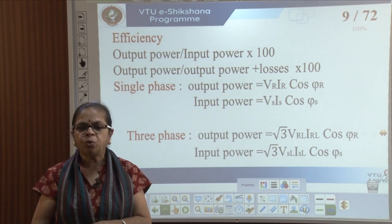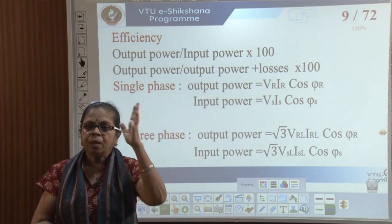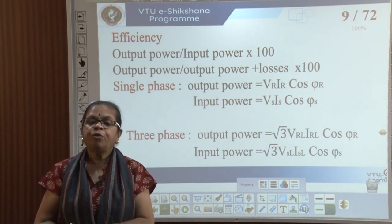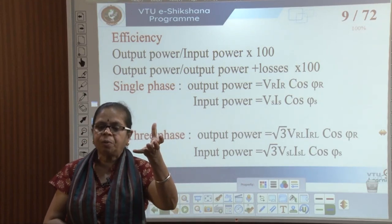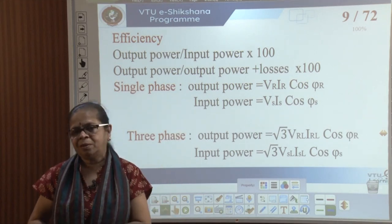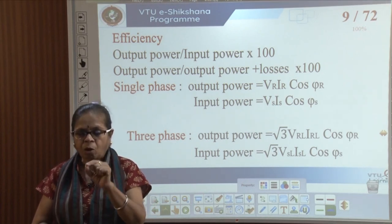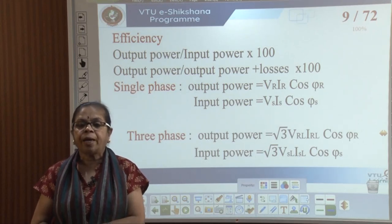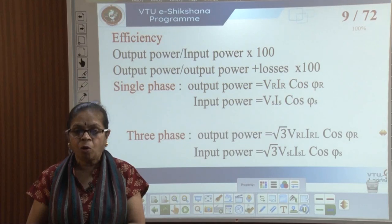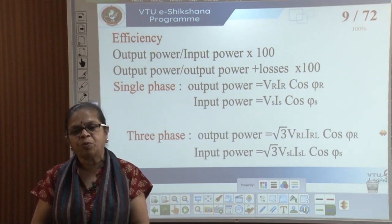Efficiency equals output power divided by input power times 100. Be careful: if you use three-phase power in the numerator, use three-phase power and three-phase loss in the denominator. For single-phase: output is VR·IR·cos(phi R), input is VS·IS·cos(phi S). For three-phase: output is root-3·VRL·IRL·cos(phi R), input is root-3·VSL·ISL·cos(phi S), or equivalently three times the per-phase values. Be very careful not to mix single-phase and three-phase quantities.